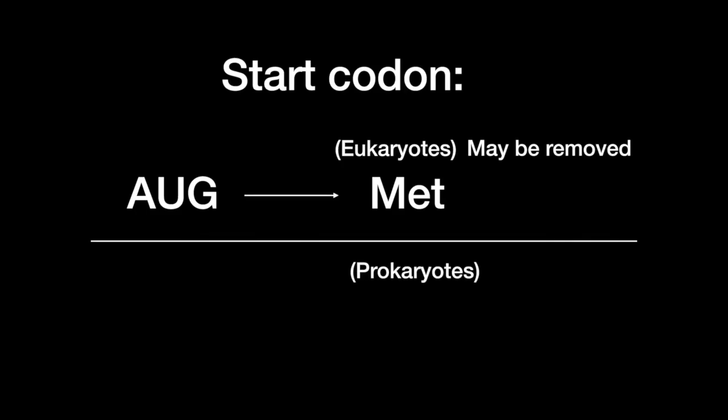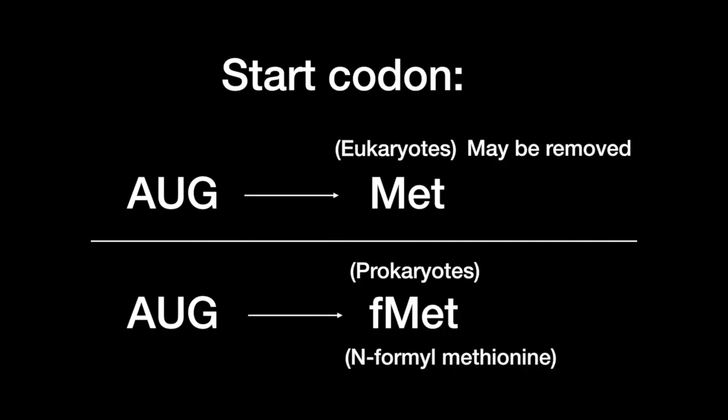And in prokaryotes, the start codon is AUG, which encodes for N-formyl methionine, which stimulates neutrophil chemotaxis in eukaryotes.